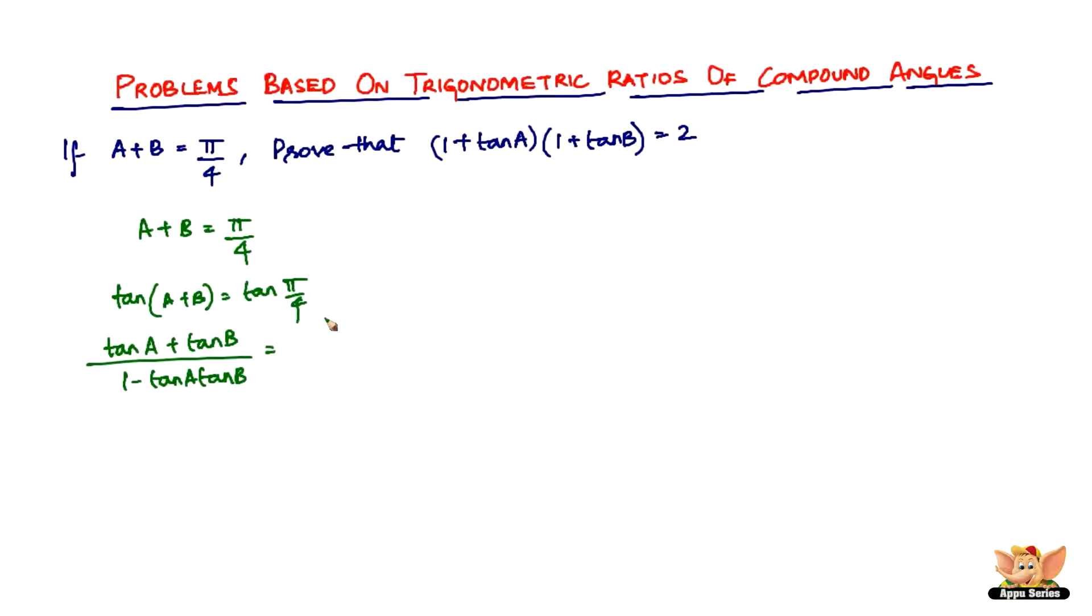You know that tan π by 4, which is tan 45 degrees, equals 1. So you can write tan A plus tan B equals 1 minus tan A tan B. This goes to the right-hand side and gets multiplied with 1, becoming 1 minus tan A into tan B.